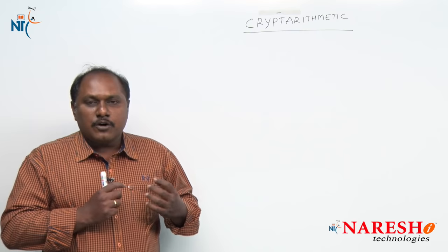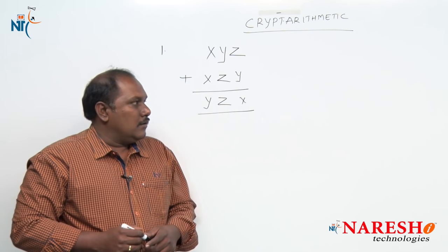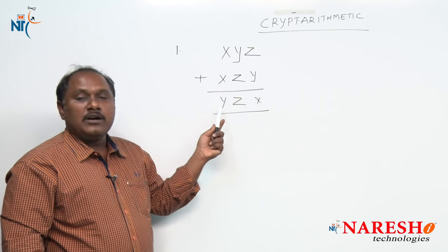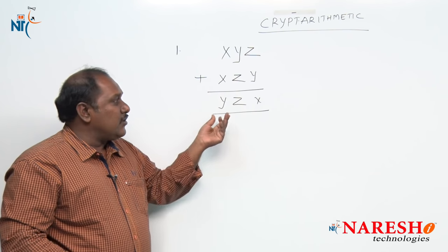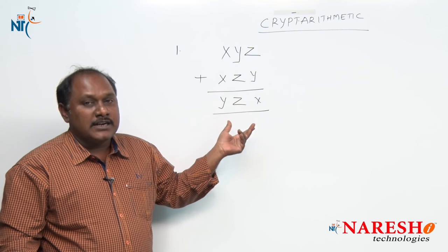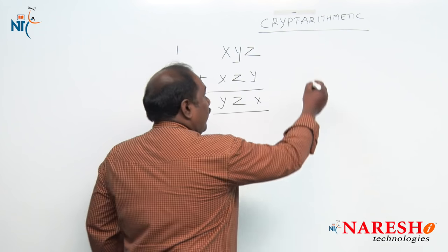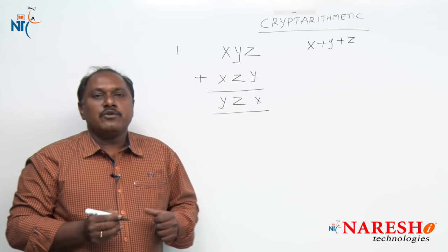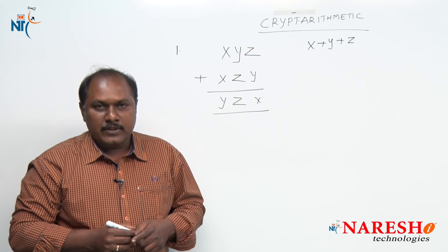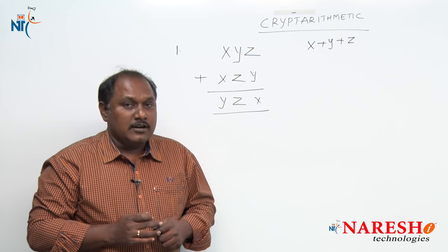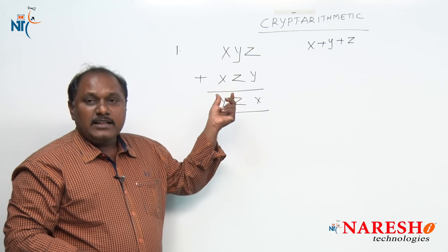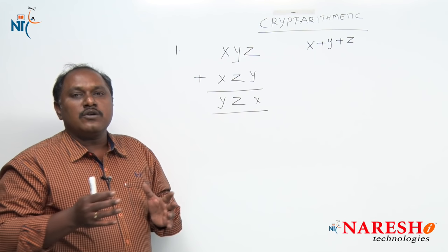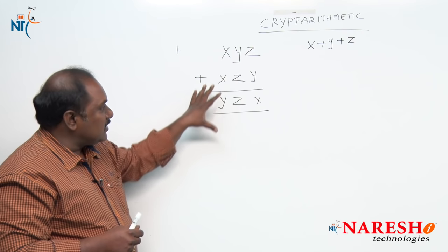Let us start this topic with a small example. The question is: xyz plus xzy is equal to yzx. If each letter represents a different digit, then what is the value of x plus y plus z? Now each letter represents a different digit. We have three different letters x, y, and z. Each of these letters represents one digit, any digit from 0 to 9. We need to place values so that this calculation is satisfied.